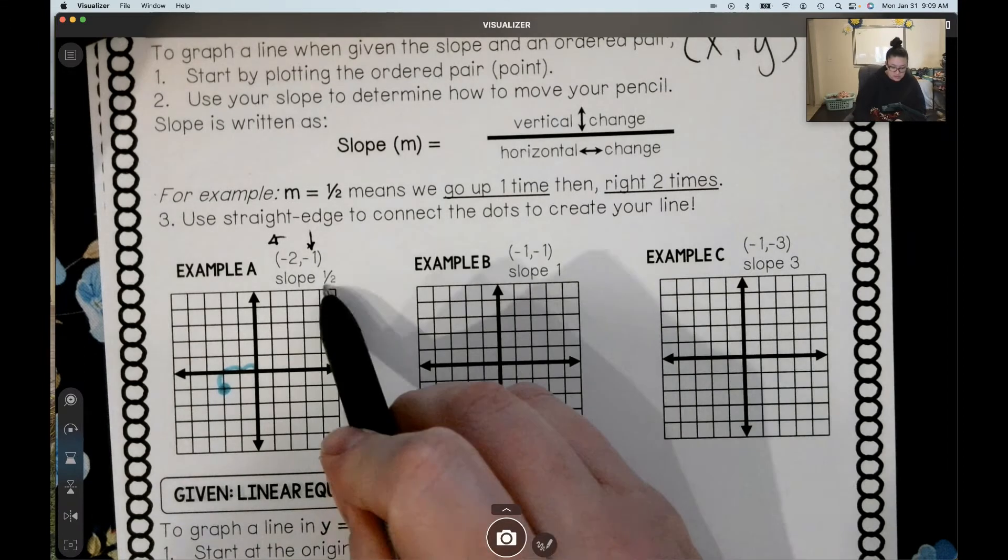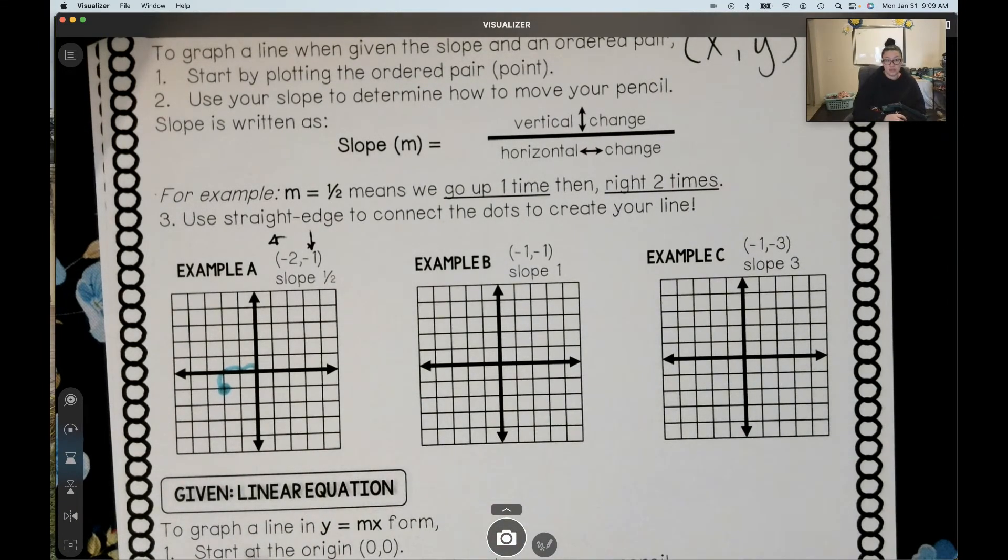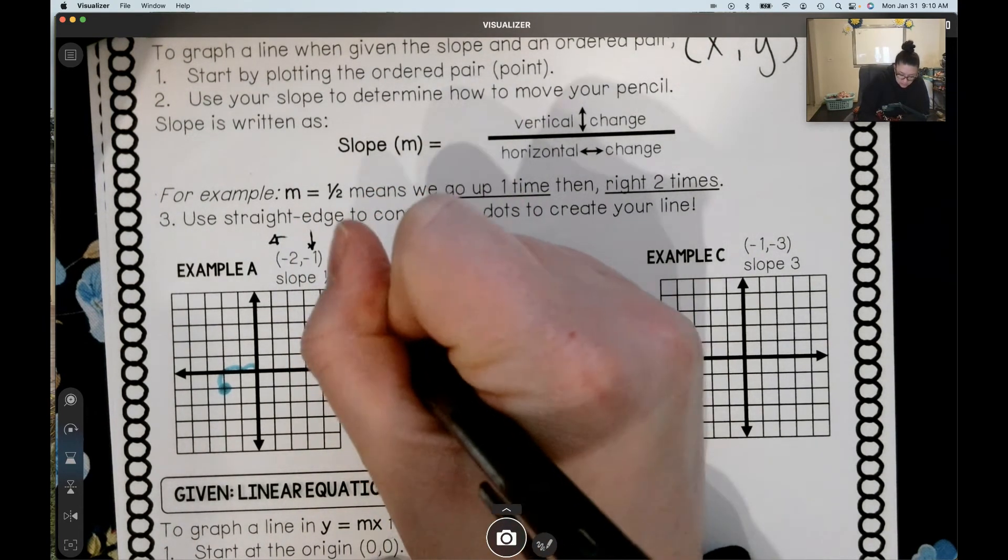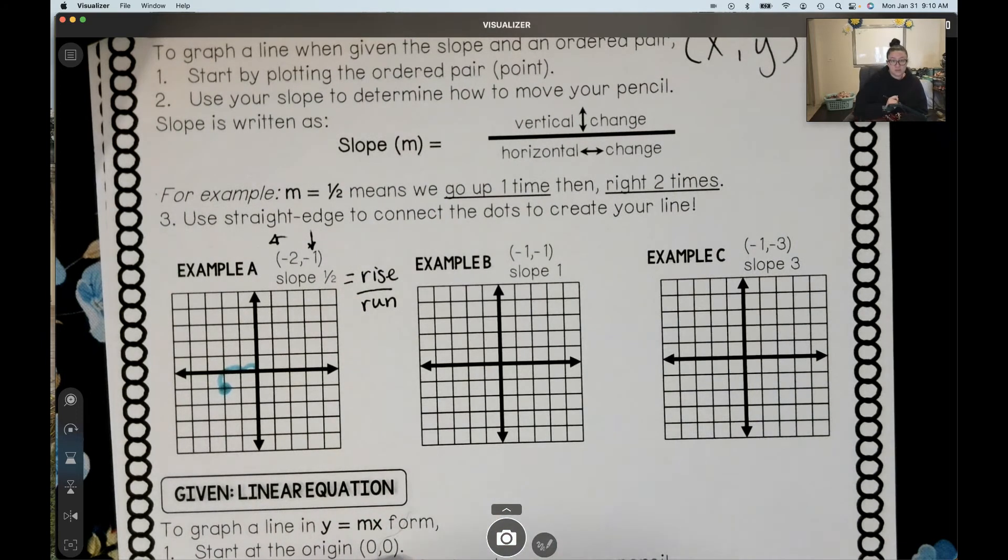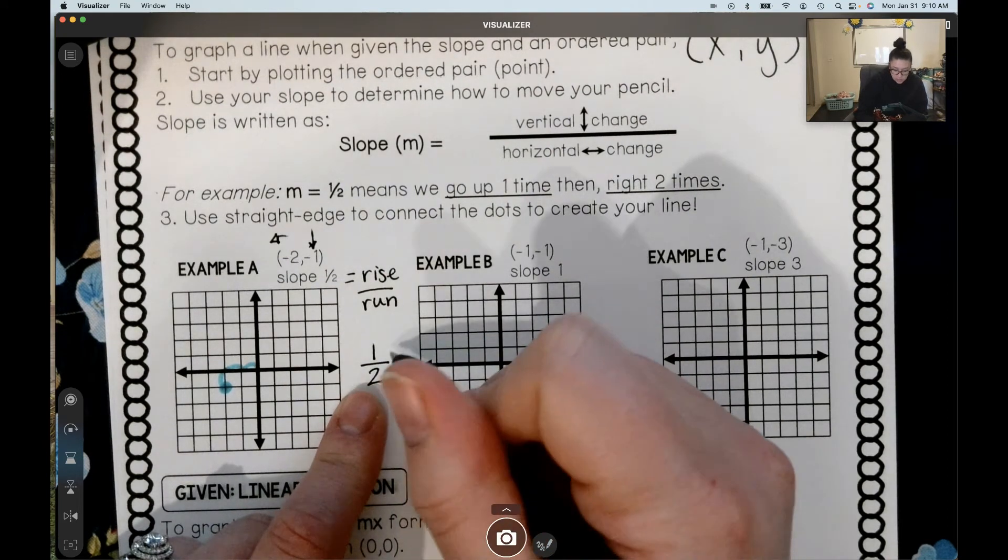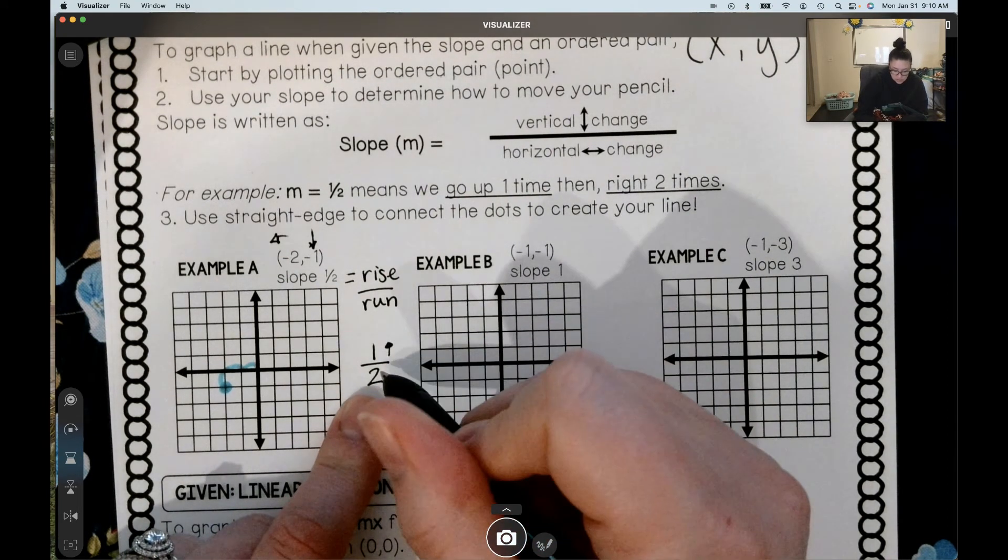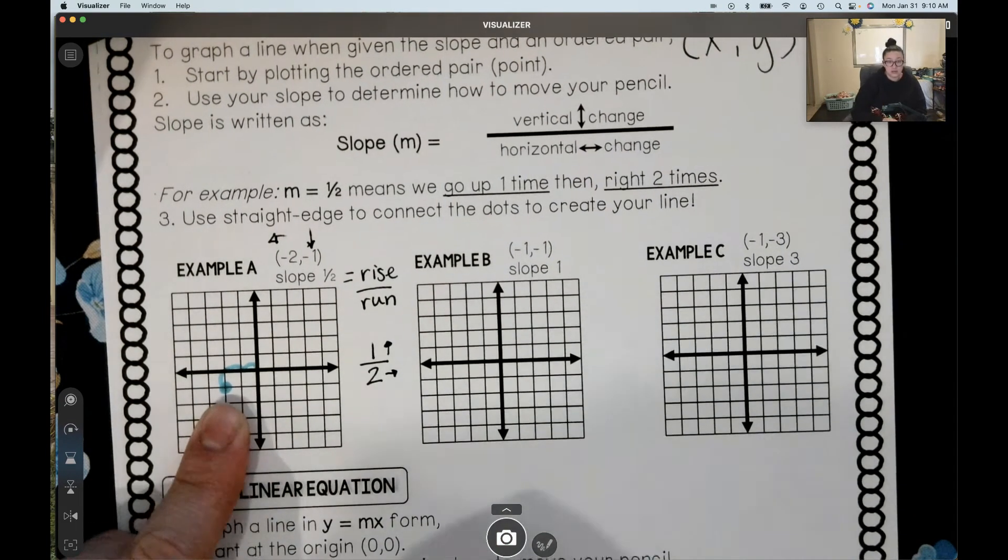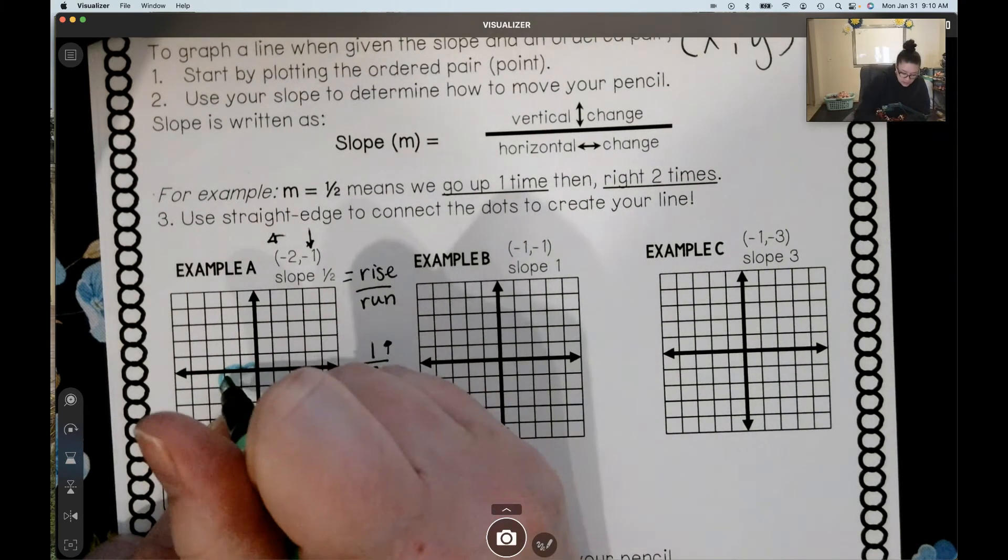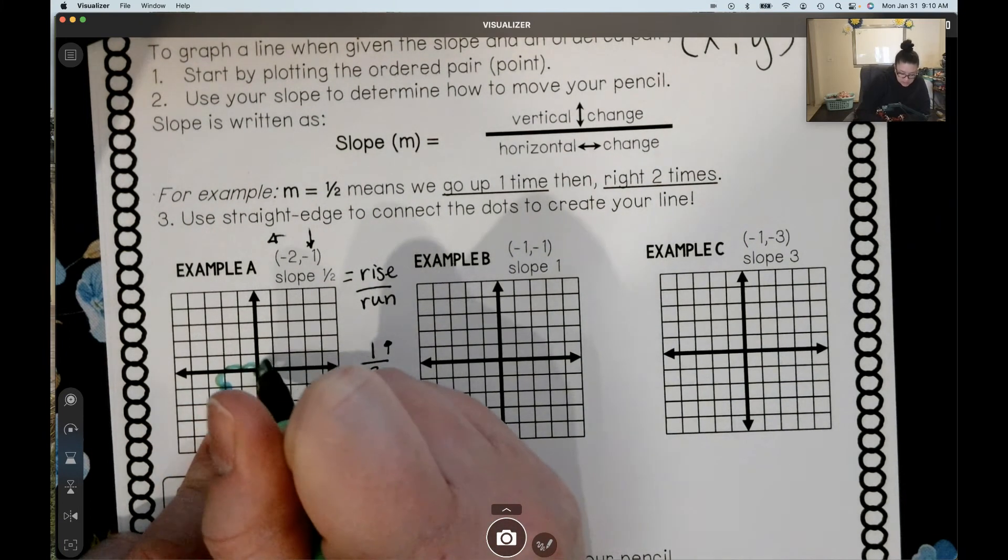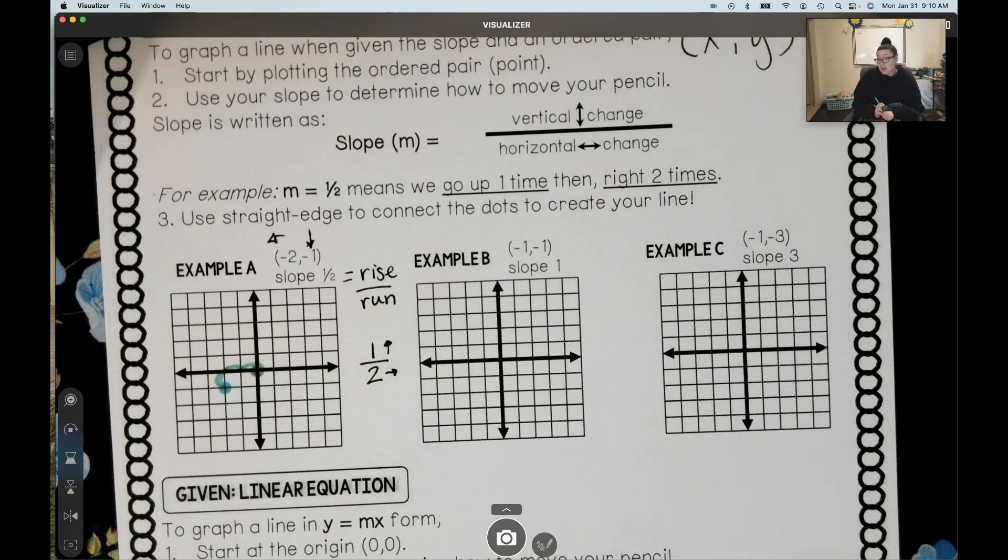Then, we need to use our slope to help us find our next point. So we remember that slope is equal to the rise over the run. So here, if our slope is 1 half, that means our rise is 1. We need to go up 1. That means our run is 2. We need to go to the right 2. So from this point here, we're going to rise, we're going to go up 1, and we're going to run 2 spaces over. And that puts us right back at our origin, right where we started. It just so happened to work out that way. It will not always.